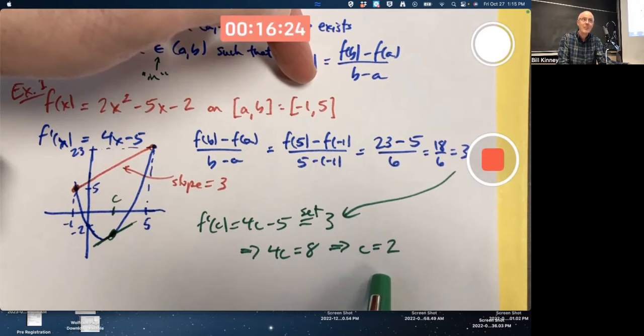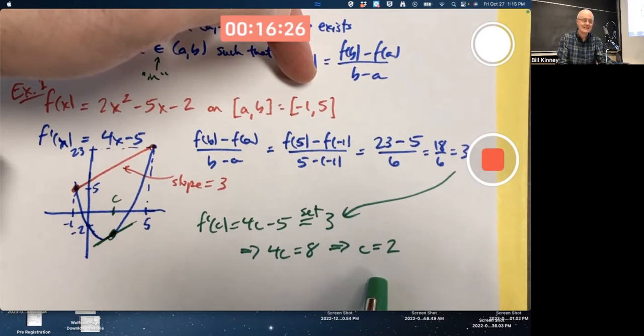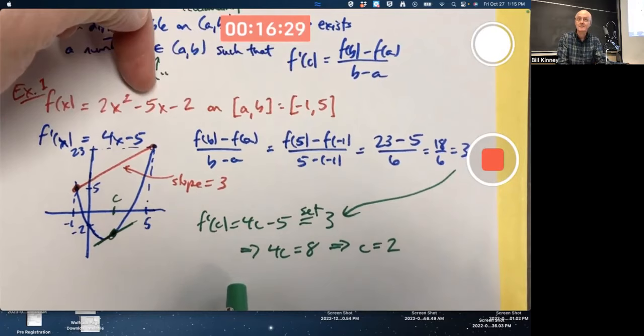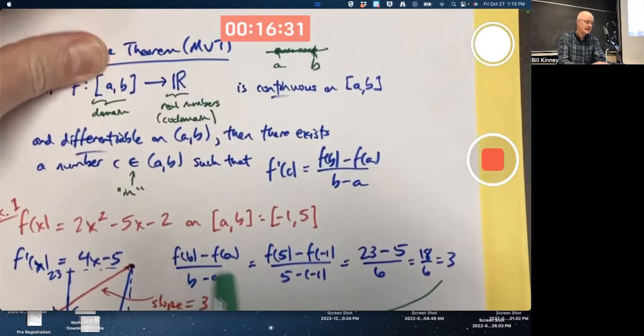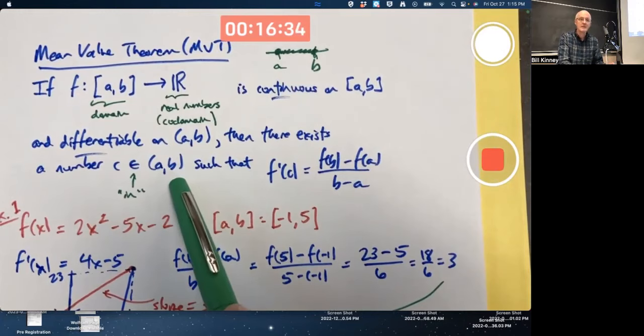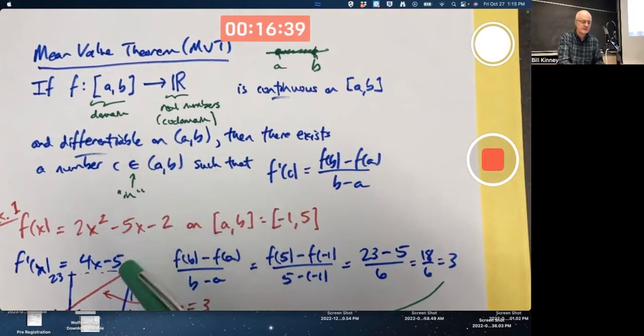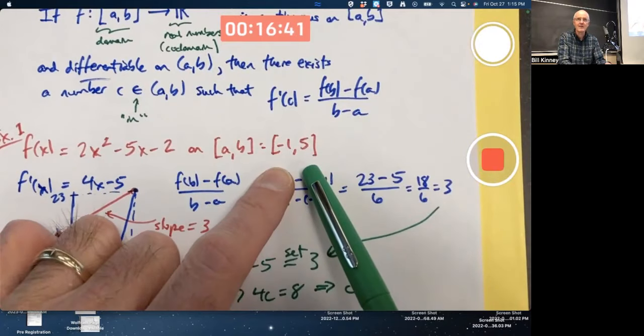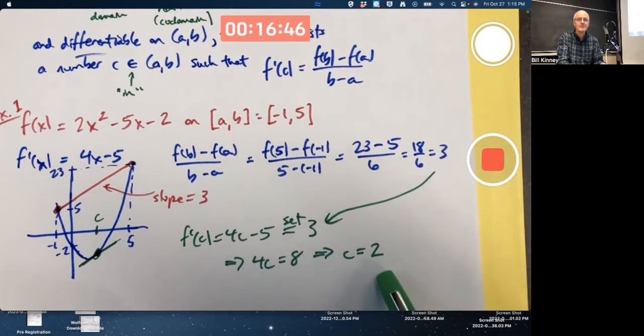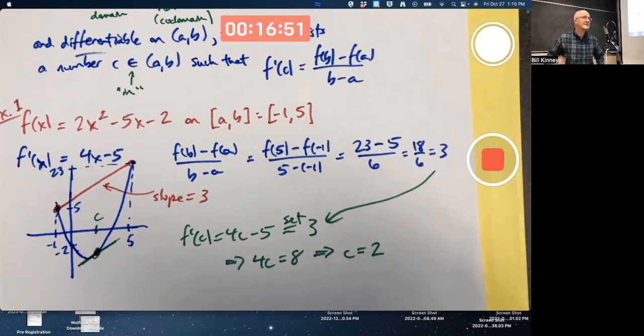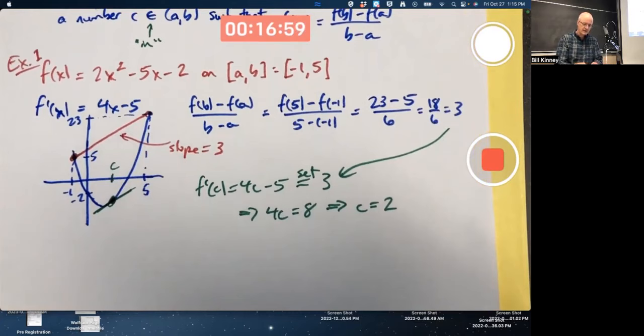Is that an accident? Not with quadratics. If your function is quadratic, the C guaranteed to exist in the mean value theorem will be at the midpoint of the interval from A to B. It'll be A plus B over 2, the average of the endpoints. It's not an accident for quadratics. But if you've got some other function, the C doesn't have to be the midpoint between A and B. For example, with example 2, we'll do a cubic example.